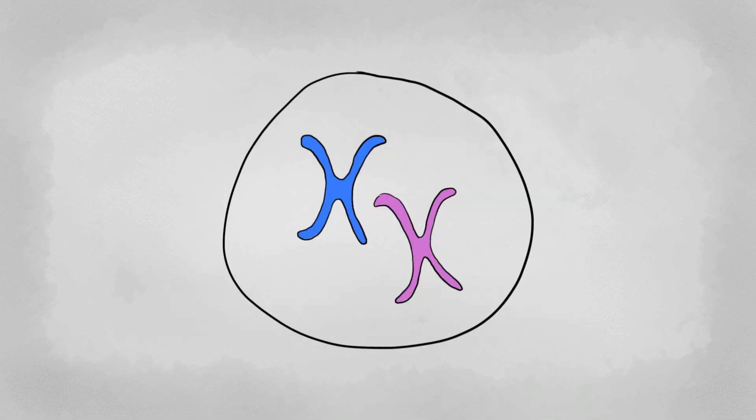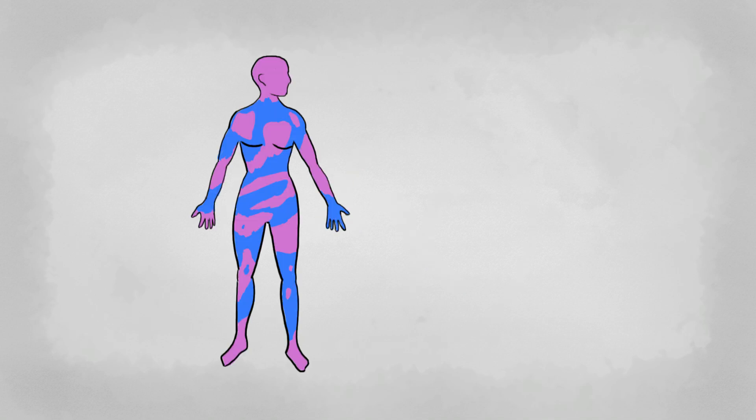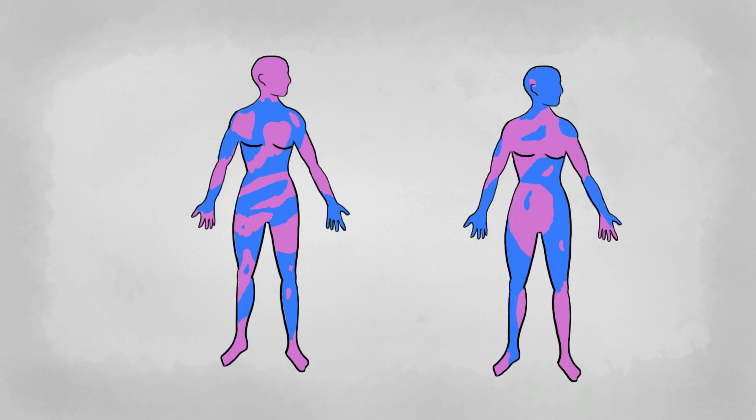But there's something different in females. Every cell in the female's body really only uses one of the X chromosomes. The other is deactivated. This happens pretty early on in development. So any trait that the X chromosome codes for will be different in any given area of cells. Some cells will have the father's traits, and some the mother's. This can lead to some interesting things, like one identical twin female having colorblindness or hemophilia, and the other not.